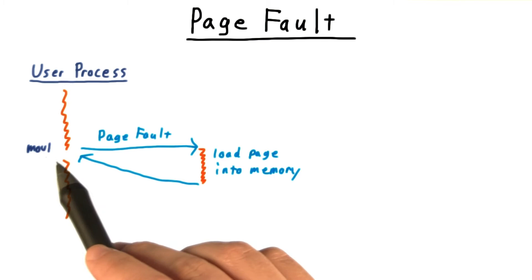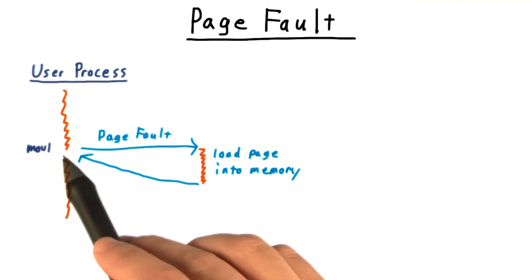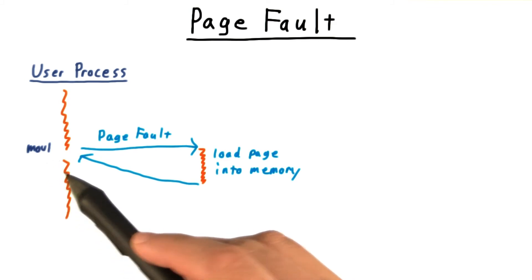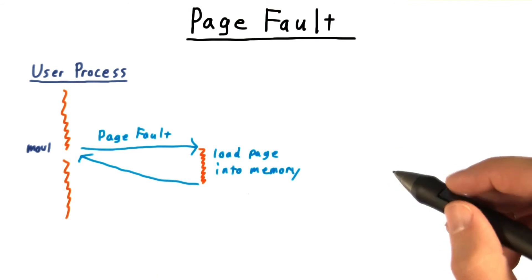The process will execute its memory move, or read, or whatever it is again. And this time it will succeed, because the page has been loaded into memory, and it can continue running. That's the high-level picture.